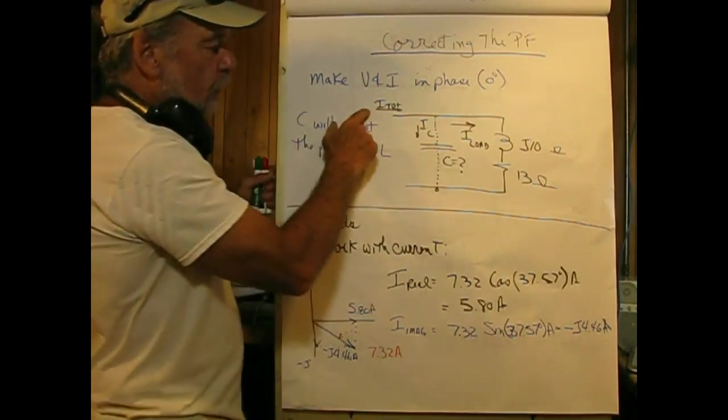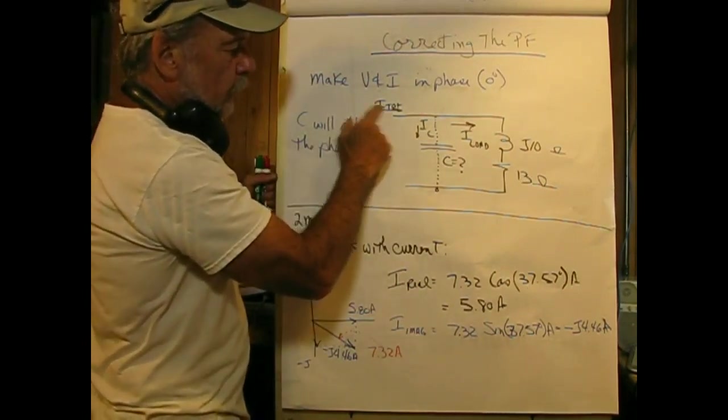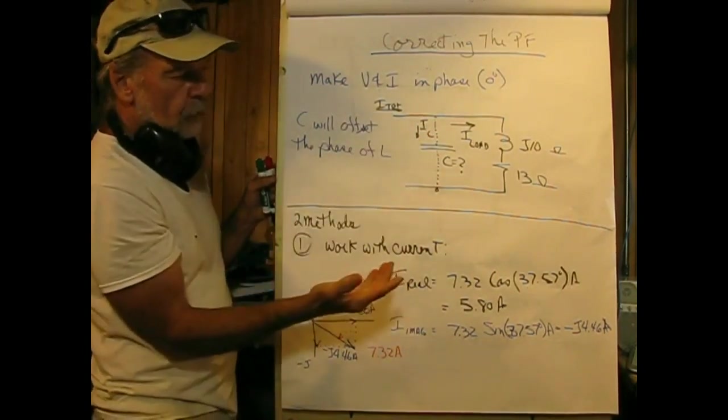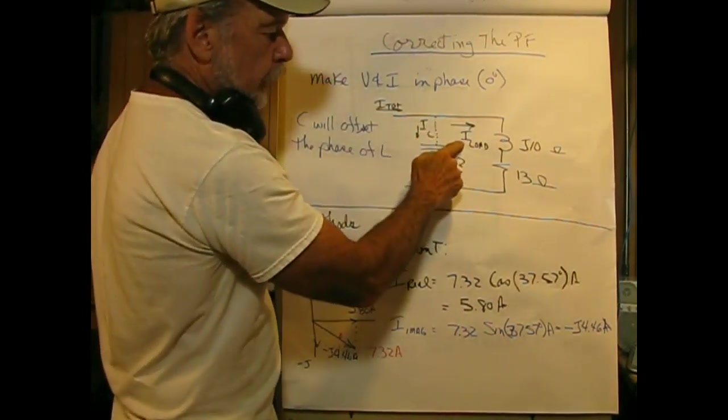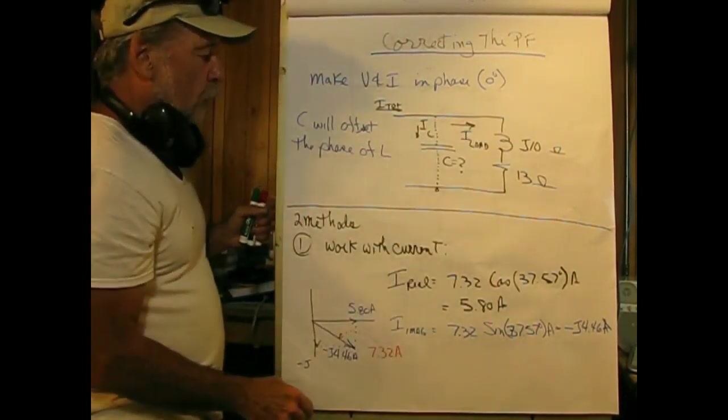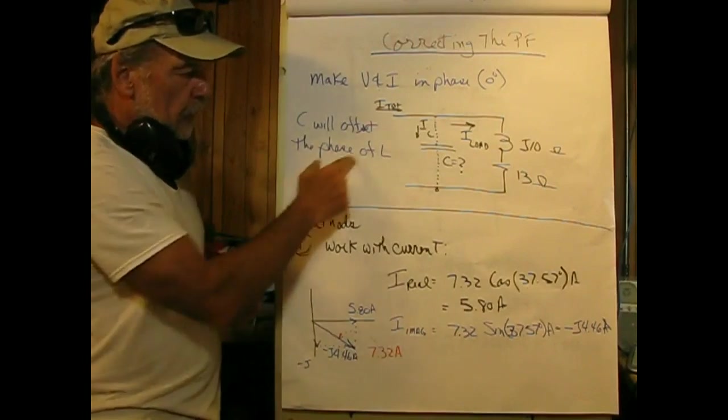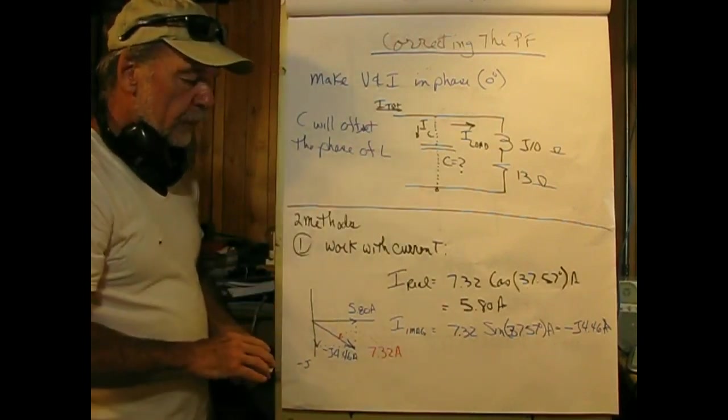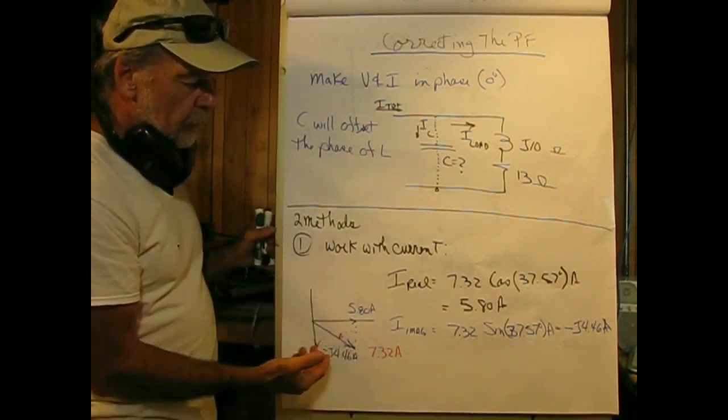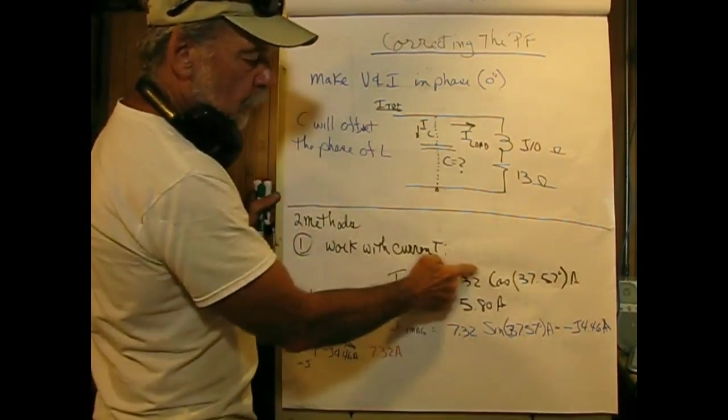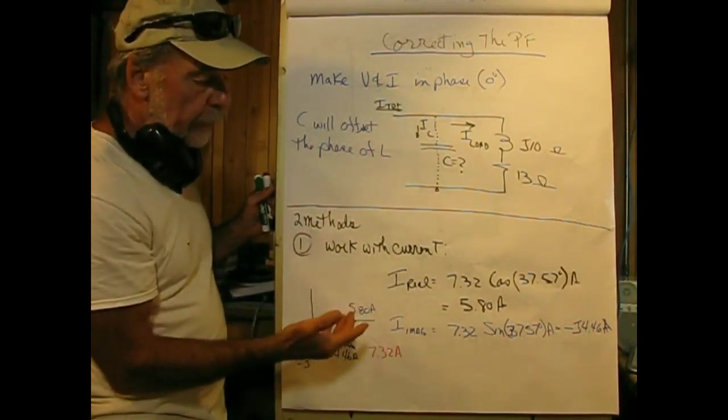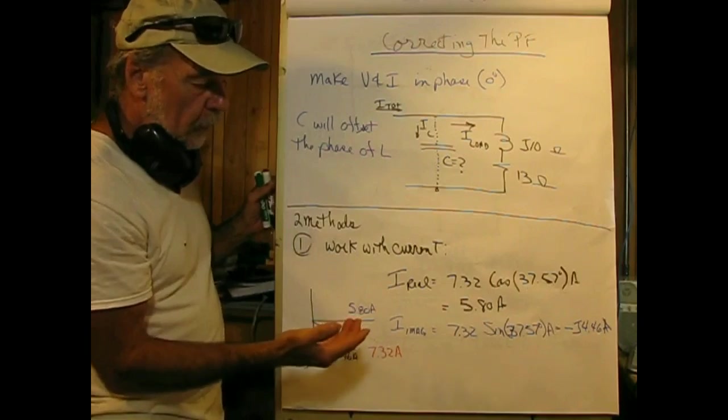We can guess that if we have an inductor in this branch, if we parallel with a capacitor, we might be able to cancel everything out, at least the inductive component. What we know from Kirchhoff is that the total current coming in is broken into two components: the capacitor current and I'm calling ILOAD because it's going through two components here. We want to null out the effects of L, and there's two methods to do that.